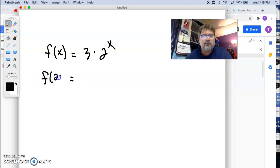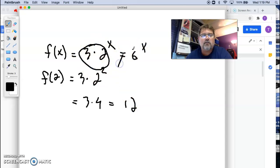Like if you did f(2), it would be 3 times 2^2, and you get 3 times 4, which is 12. You could never multiply these together and call it 6^x. Don't do something like that. Okay, just making that real clear.